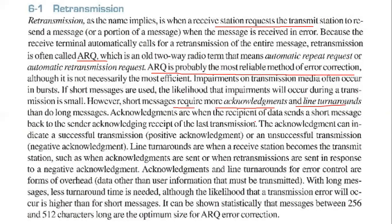Acknowledgements are when the recipient of data sends a short message back to the sender acknowledging receipt of the last transmission. The acknowledgement can indicate a successful or unsuccessful transmission. Line turnarounds are when a receive station becomes a transmitting station, such as when acknowledgements are sent or when retransmissions are sent in response to a negative acknowledgement.